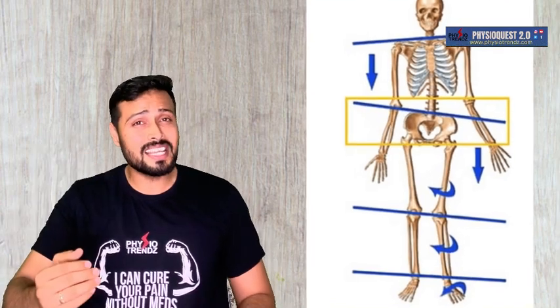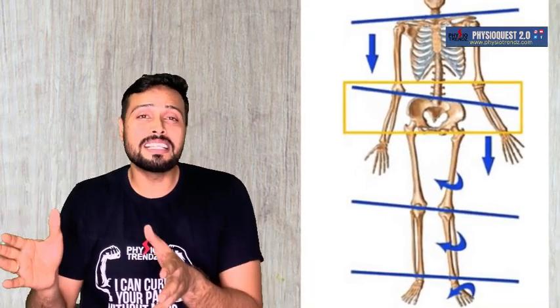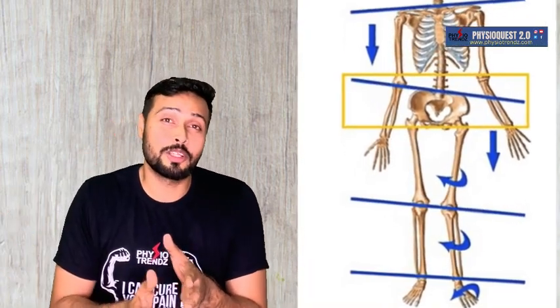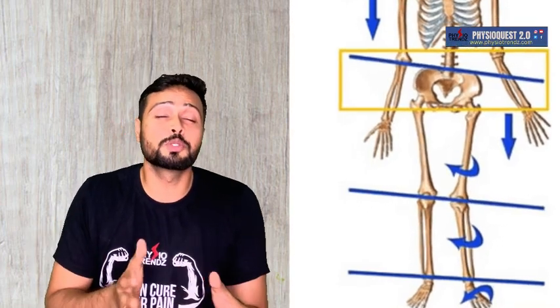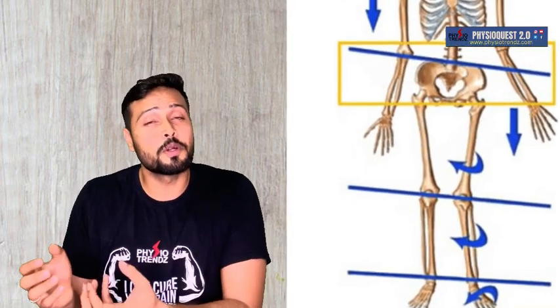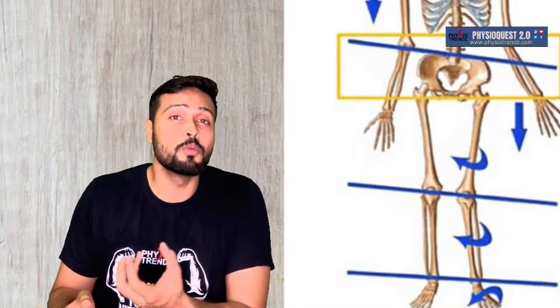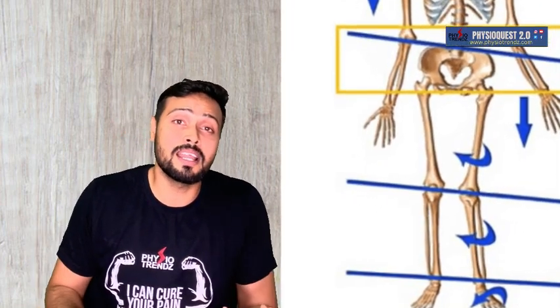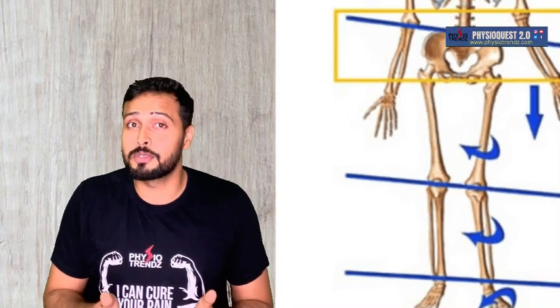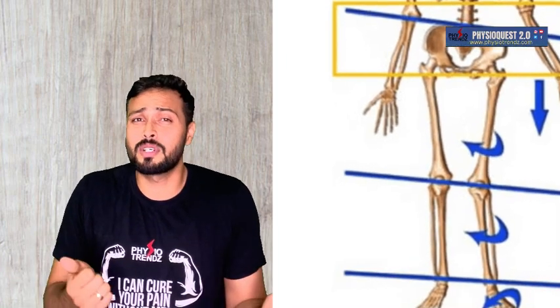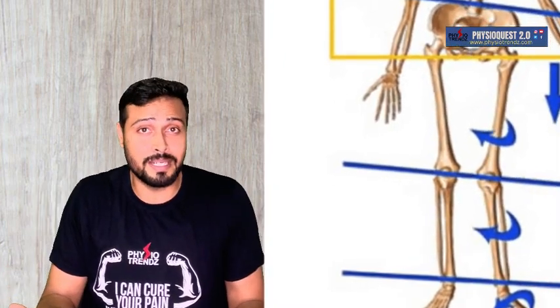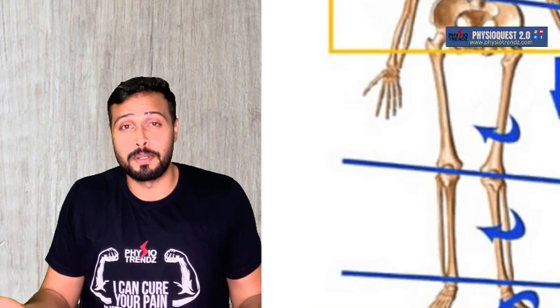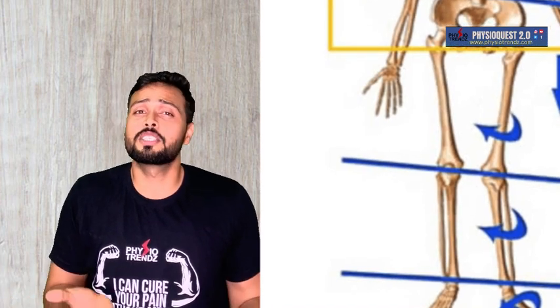Option C is about controlling genu valgum. Controlling genu valgum means you are placing the leg more towards the midline, which means you are reducing the base of support. That is not something a therapist would want to adjust for in this situation, so that option cannot be correct.